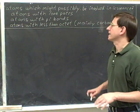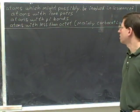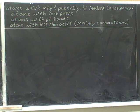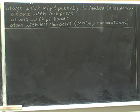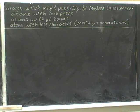Here's something to put in your notes. The atoms which might possibly be involved in resonance are: the atoms that have lone pairs, the atoms with pi bonds, and the atoms that have less than an octet of electrons — mainly carbocations. Now's a good time to pause the video and put this in your notes.